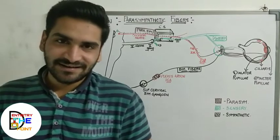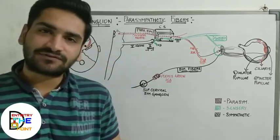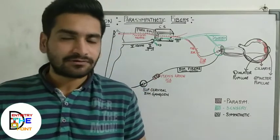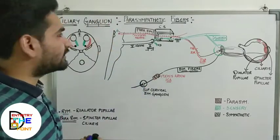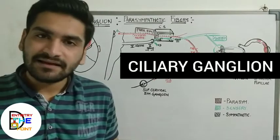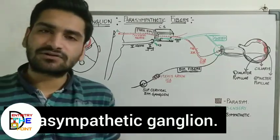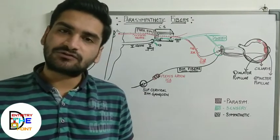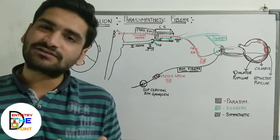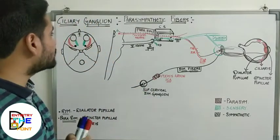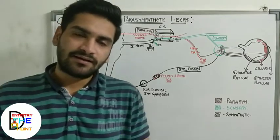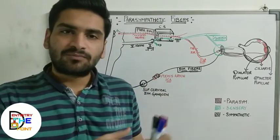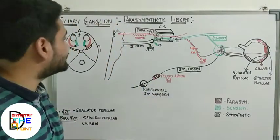Hi everyone, welcome back to our channel, Dentistry to the Point. This is Dr. Dhruvil Manik. After discussing the first division of the trigeminal nerve - the ophthalmic division - we are now going to discuss the ganglion related to that division, which is the ciliary ganglion. We are learning about four parasympathetic ganglia: the otic ganglion, sphenopalatine ganglion, ciliary ganglion, and submandibular ganglion. The third one we're studying is the ciliary ganglion. I've already made videos on the otic and sphenopalatine ganglia - you can check them in the playlist and the description box.